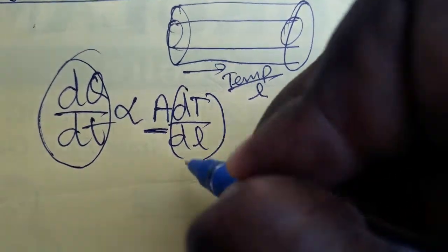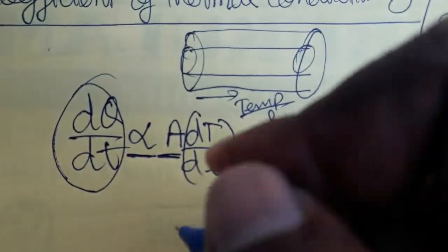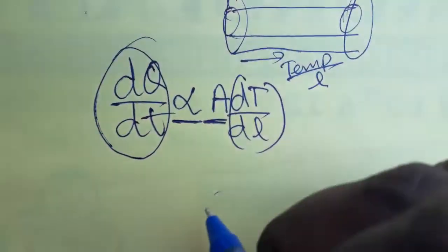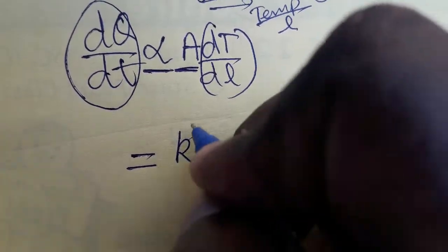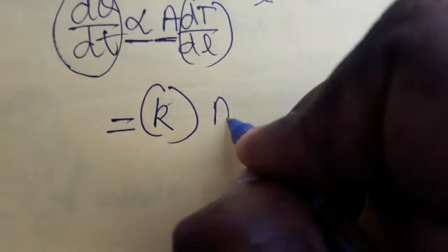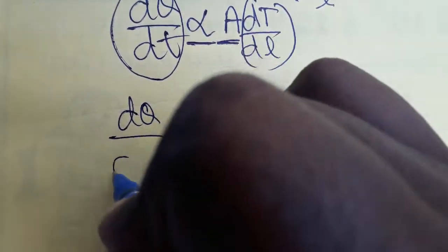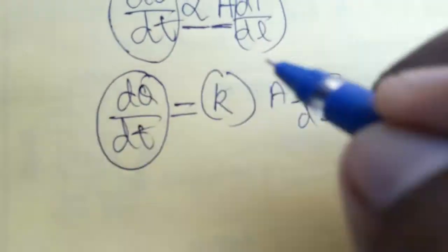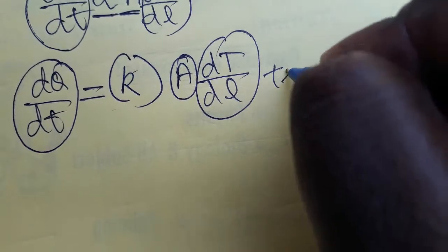Heat transferring depends on two factors: one is the area of the metal, and another is the temperature changing with respect to the length. Since it is directly proportional, we include a constant. Here k is going to represent the coefficient of thermal conductivity. So: k × A × dT/dL = dQ/dt.